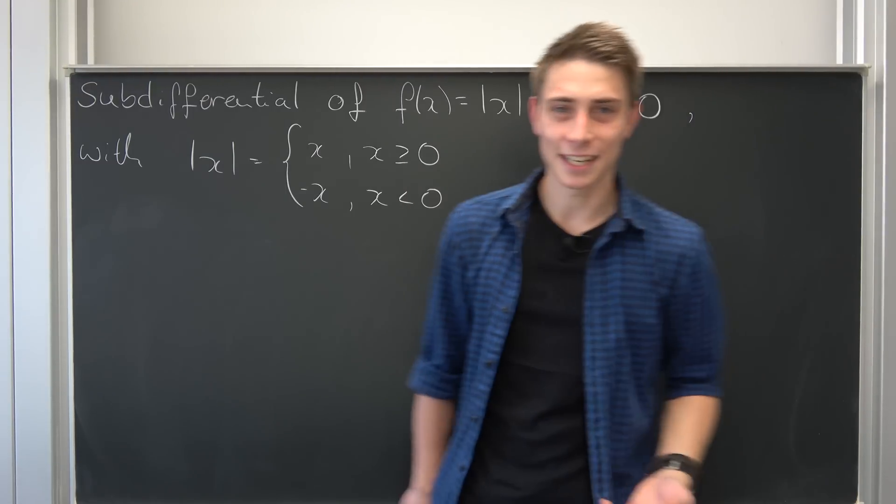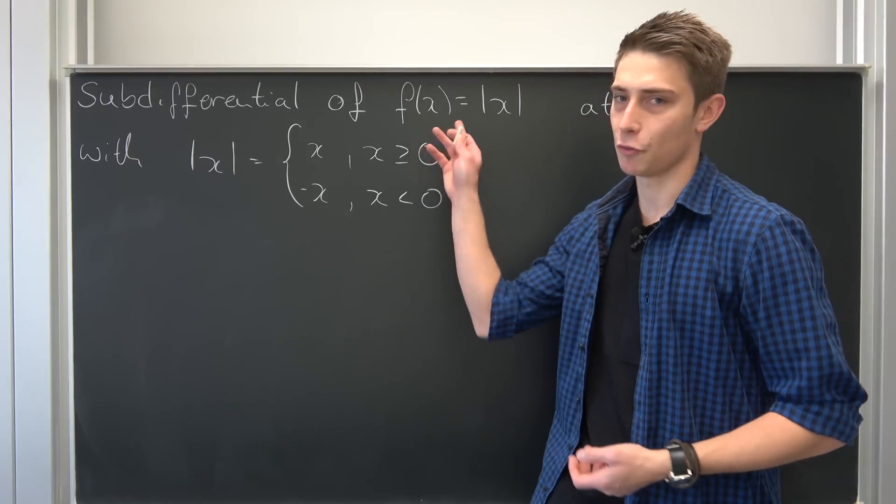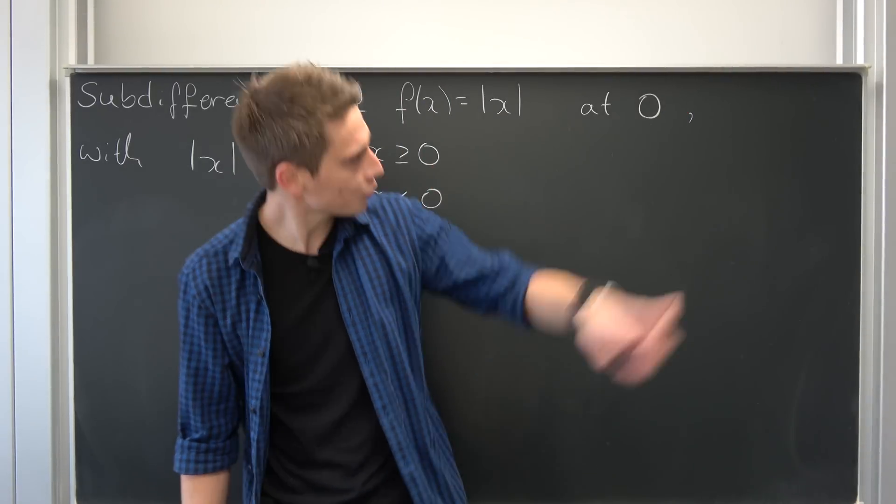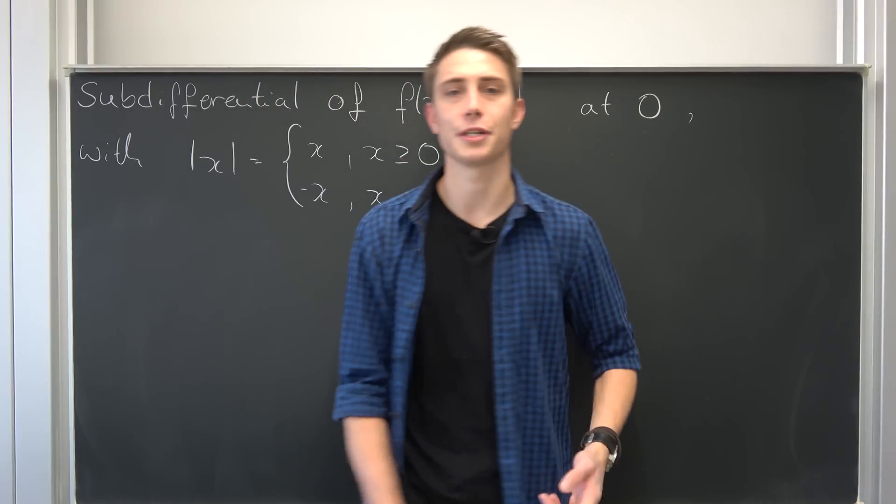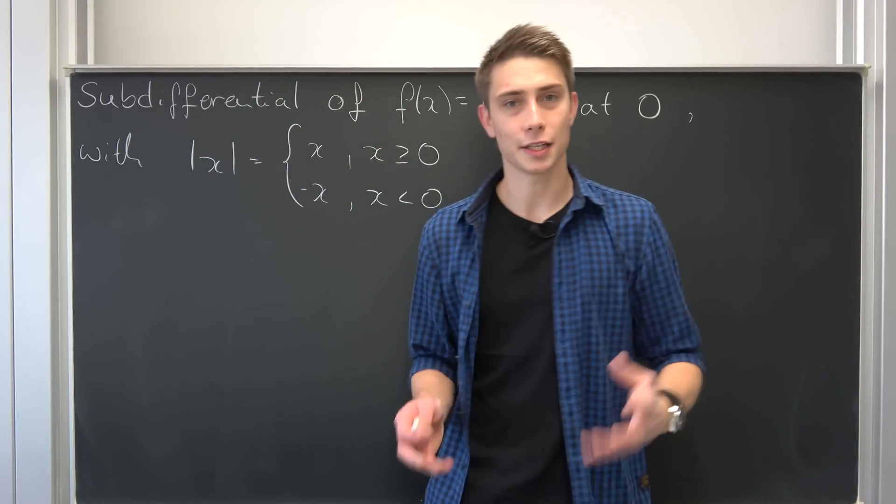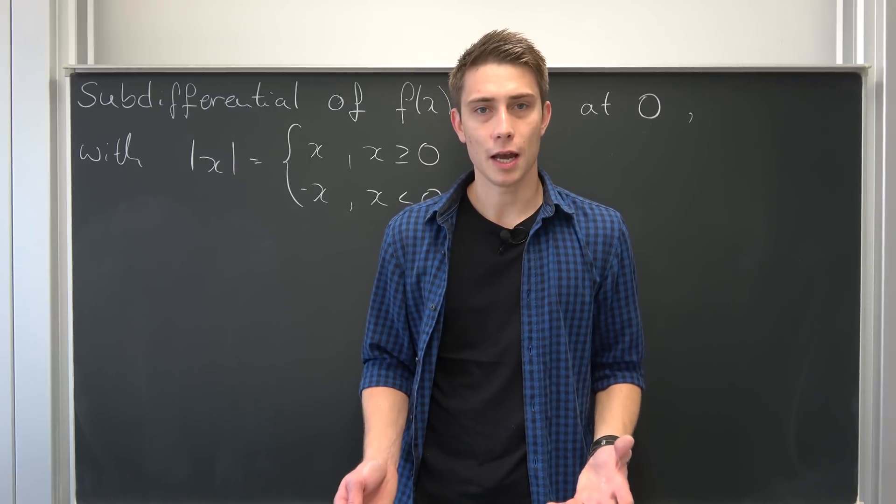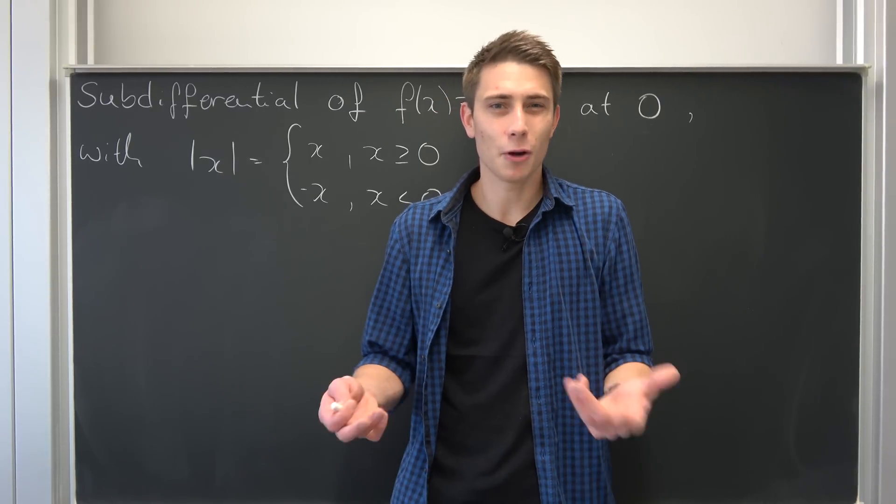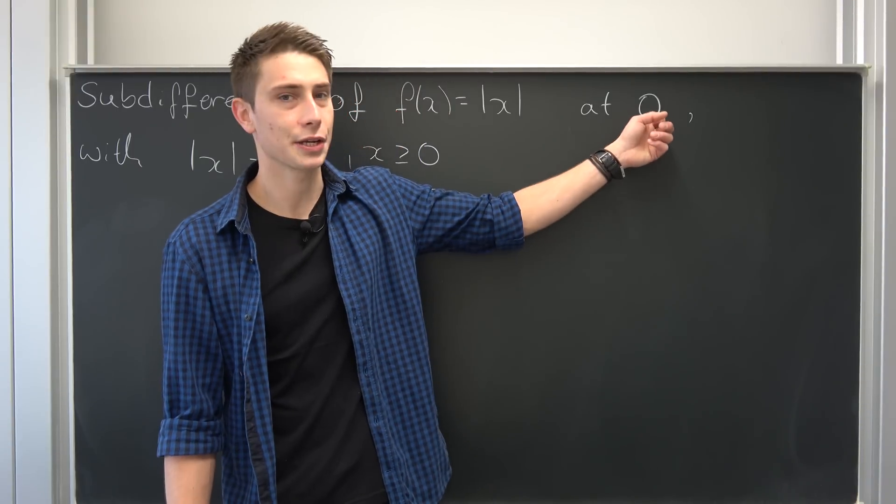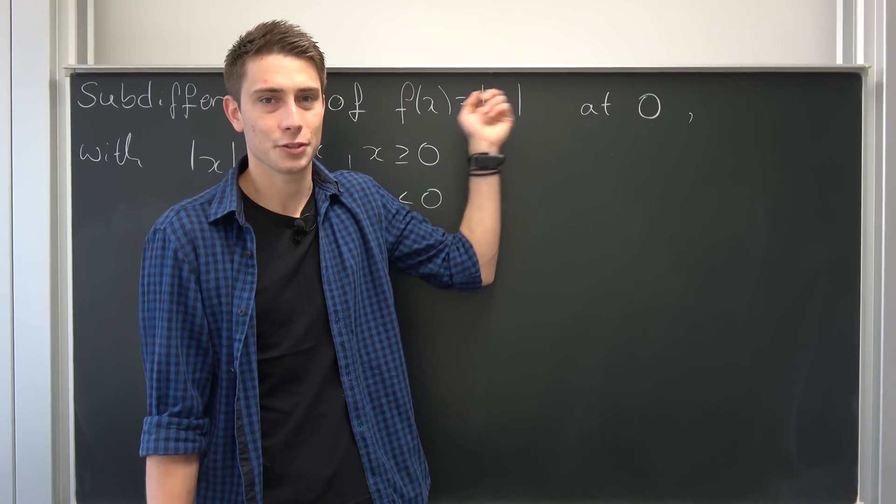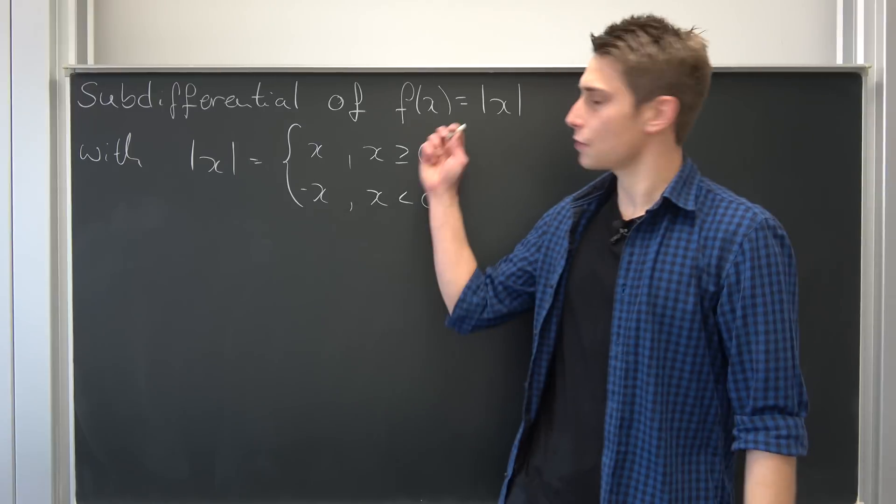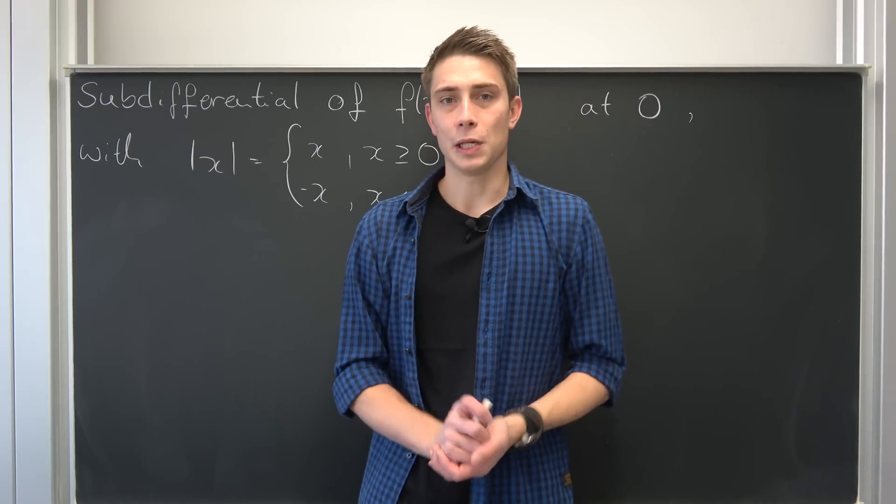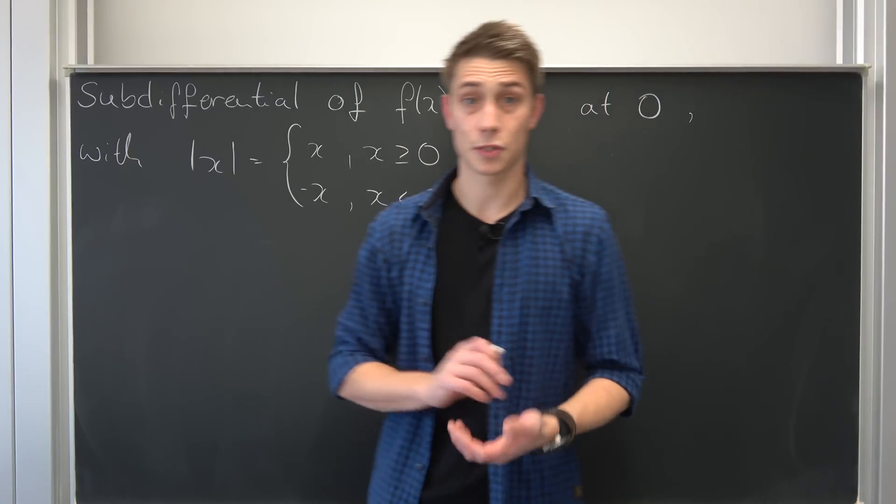We are going to calculate the sub-derivative of the absolute value of x at the point x not equal to 0, because some functions are not differentiable everywhere. Some points just cause problems, just like 0 right here. You just can't differentiate this function at 0, and that's where sub-derivatives or super-derivatives come into play.